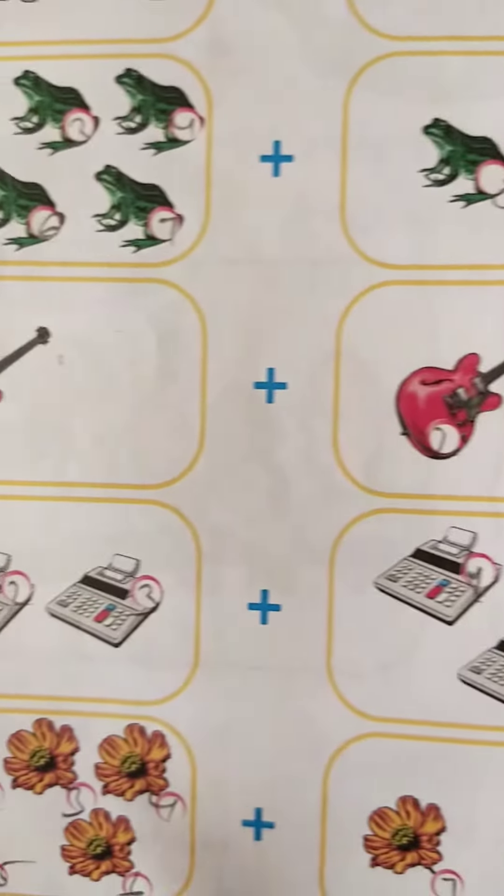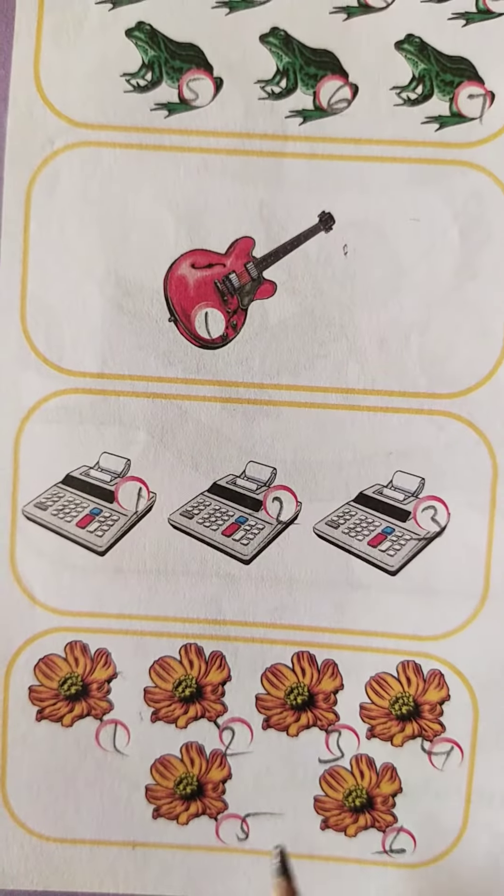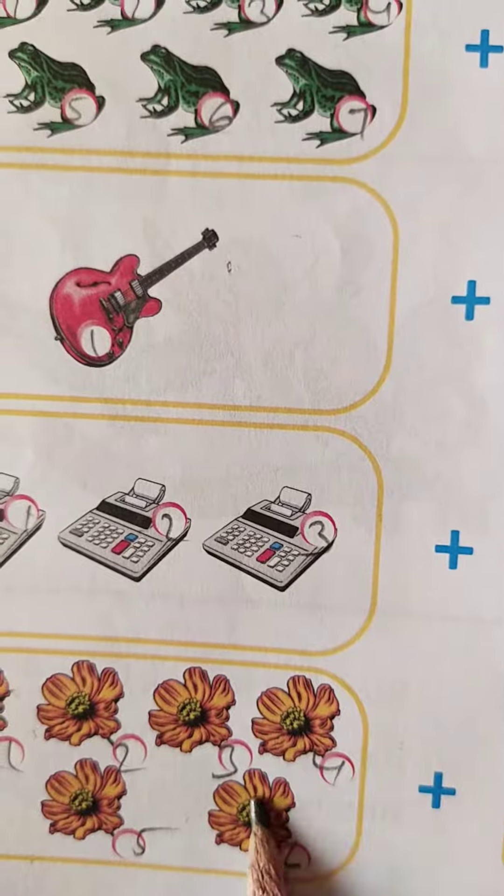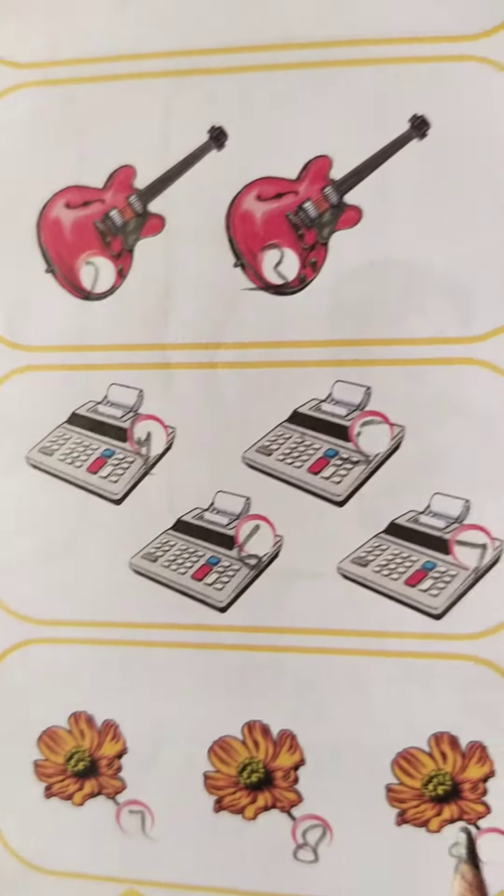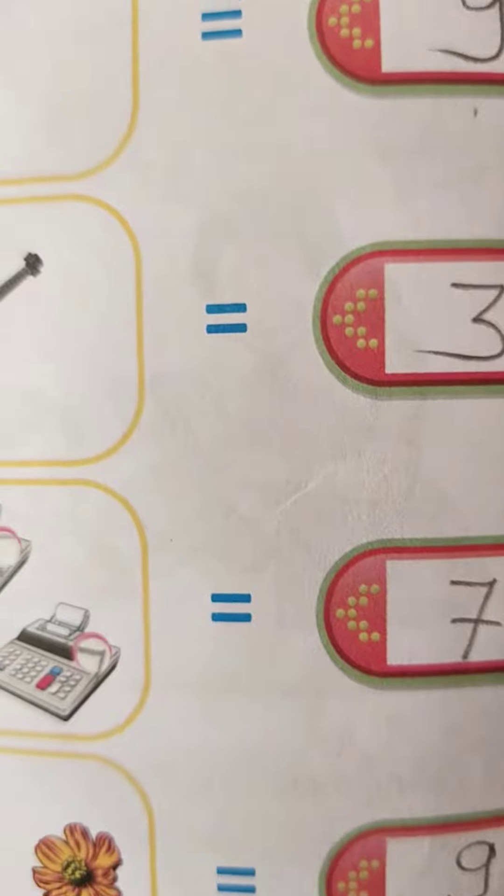And here how many flowers are there? 1, 2, 3, 4, 5, 6. And here 7, 8. So 7, 8, 9. So you will write 9 here.